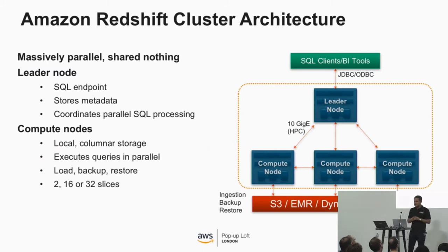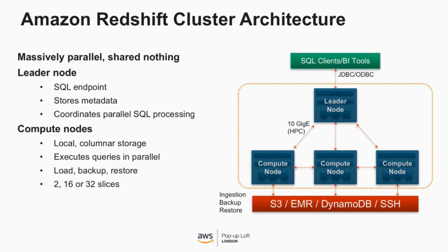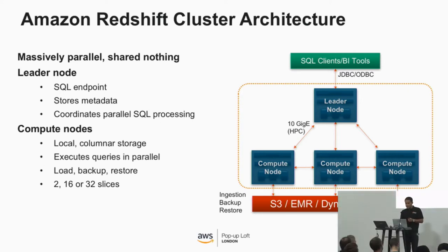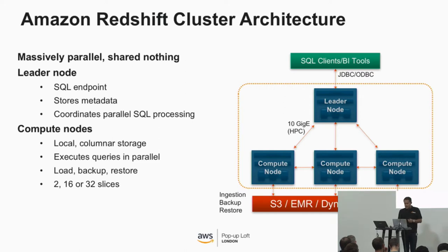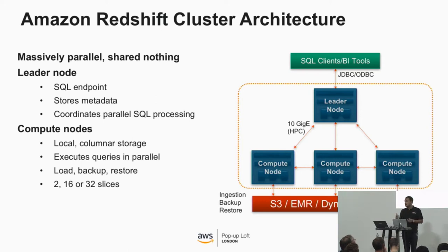The bit you'd work with in Redshift is called the leader node — that's where you connect through your application, SQL tool, or BI tool over JDBC/ODBC drivers. You can download the Amazon Redshift driver from Amazon's website or use Postgres JDBC drivers. Behind the leader node are the compute nodes. The leader node gets your SQL, compiles it into C++ code, and throws it to the compute nodes. We are continuously backing up the cluster to S3. The leader node also has Postgres catalog tables plus additional catalog tables for you to query metadata as well.